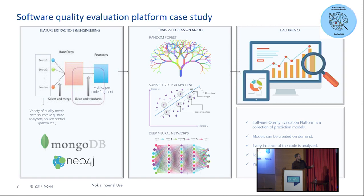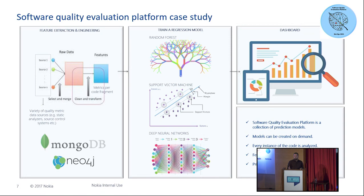The software quality evaluation platform is a collection of analytics and prediction models. Users are able to create custom models, choosing a specific quality KPI to optimize, and use the platform to create custom state-of-the-art quality KPIs. Every instance of the code is analyzed, and specific thorough feedback is provided to users — including specific improvement actions. We also provide prioritization capability for these improvement actions.